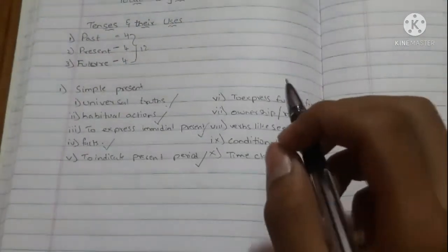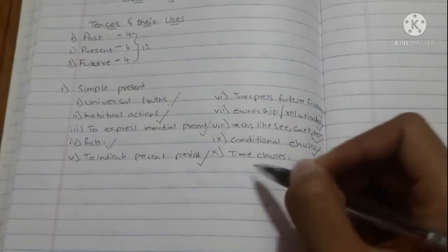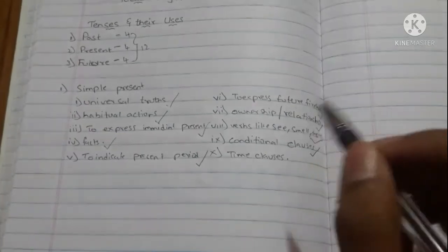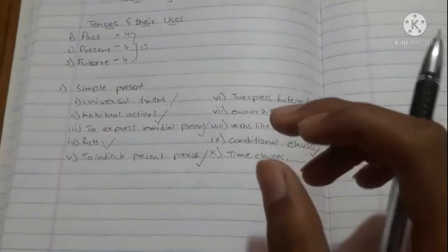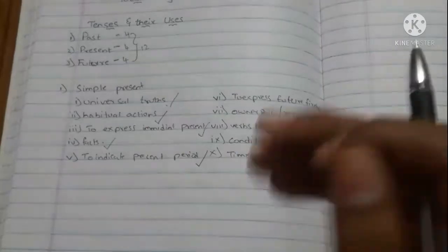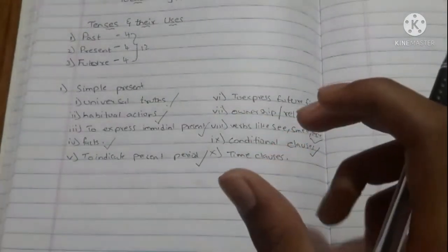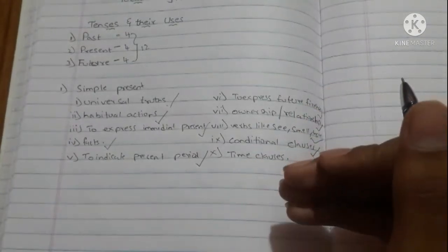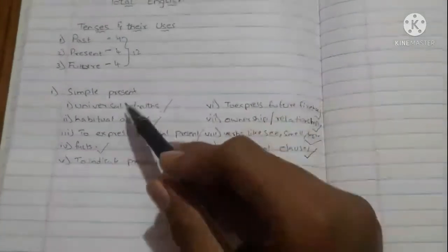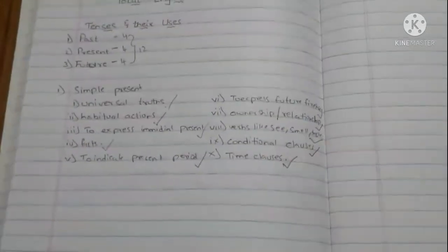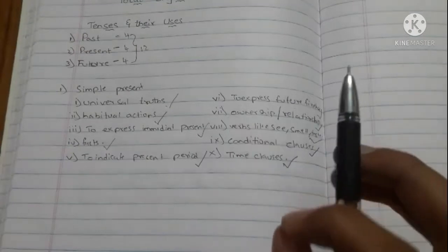Now, time clauses — these are introduced by conjunctions of time. For example: when you reach Chennai I shall meet you, I will stay there till you come back. Here a specific time is mentioned — 'when you come back,' 'when you reach Chennai.' These types of time clauses use simple present.